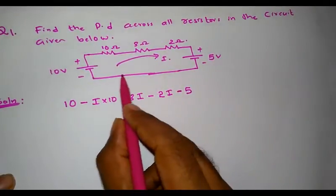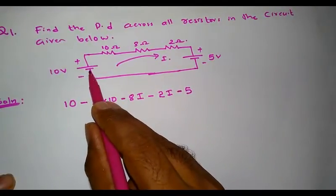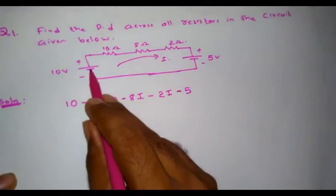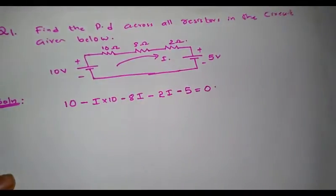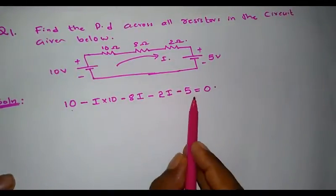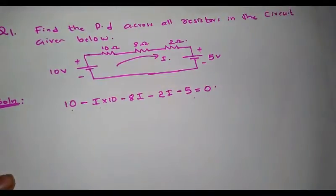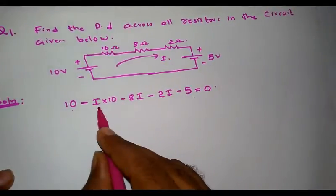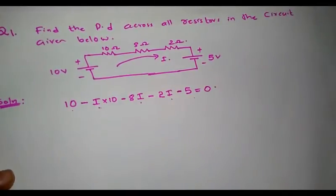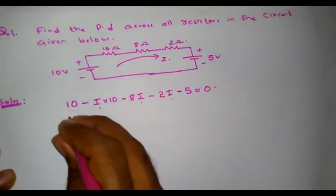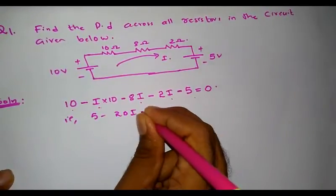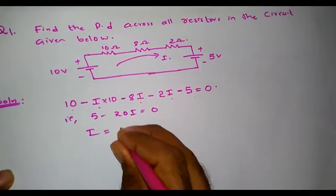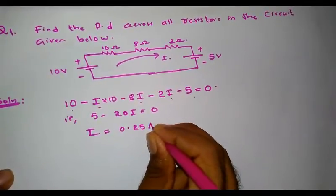I continue moving along the circuit and do not encounter any other element, arriving back at the starting point. This completes the mesh equation. According to Kirchhoff's voltage law, the algebraic sum of EMF and potential drops in a closed circuit equals zero. There is only one mesh equation and one unknown, the current I. Solving the equation gives 5 − 20I = 0, so current I = 0.25 amperes.